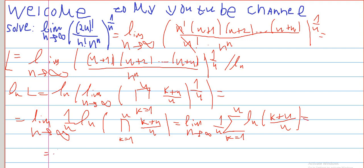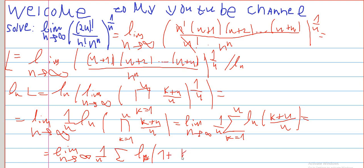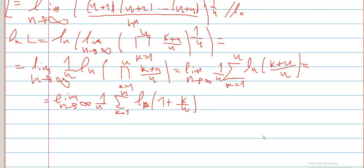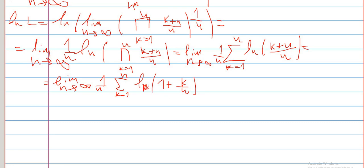This equals a limit as n approaches infinity of 1 over n times the sum of ln of 1 plus k over n as k goes from 1 to n. What we have here is a Riemann sum of an integral.